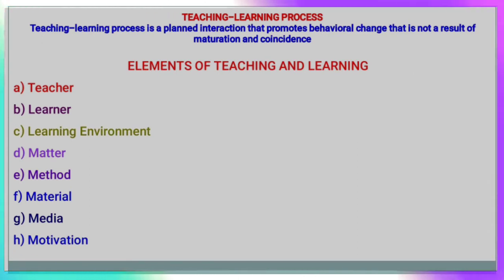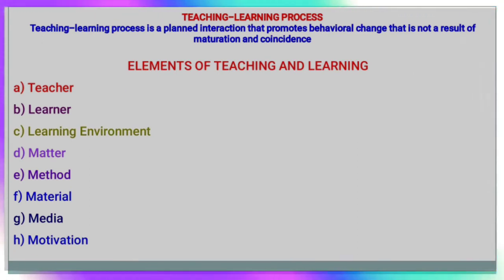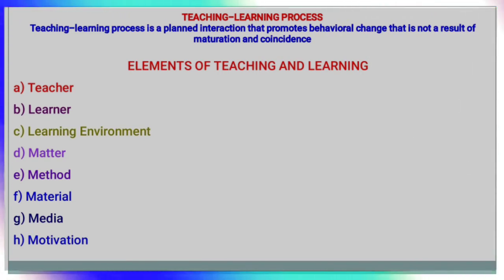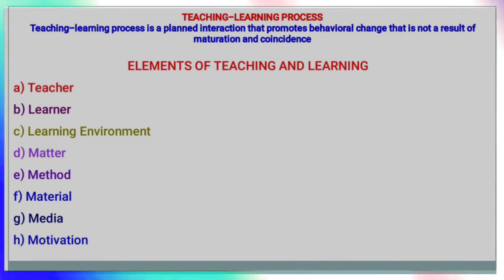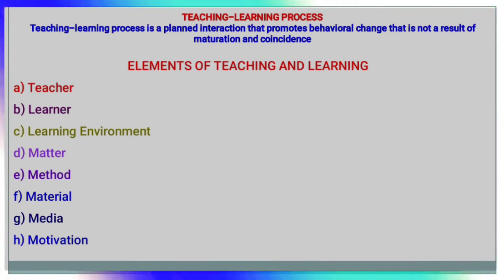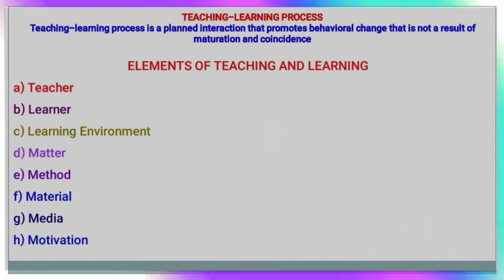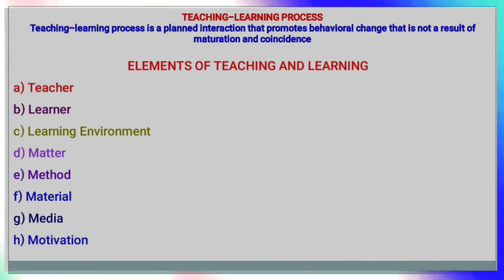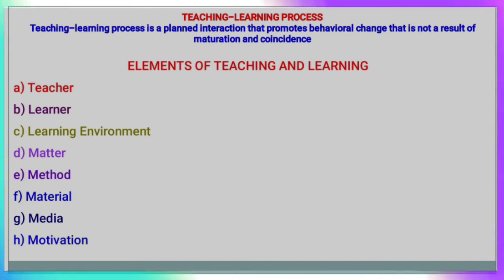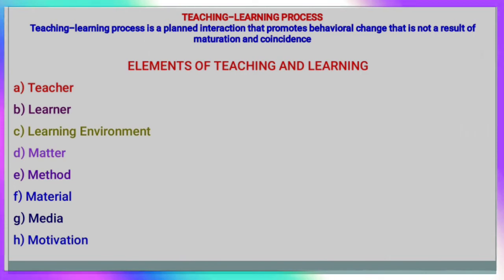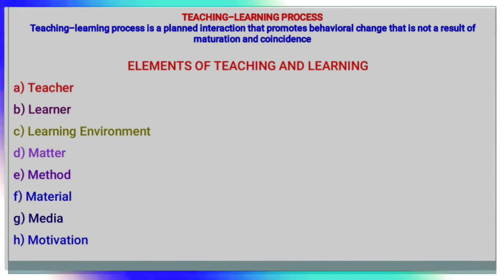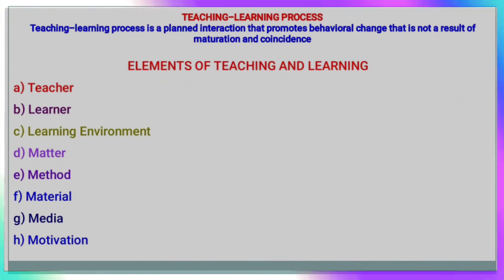Now comes the main topic — teaching learning process. Teaching learning process is a planned interaction that promotes behavioral change that is not a resultant of maturation and coincidence. The elements of teaching and learning are: first, teacher; second, learner; third, environment; fourth, matter; fifth, method; sixth, material; seventh, media; and eighth, motivation.